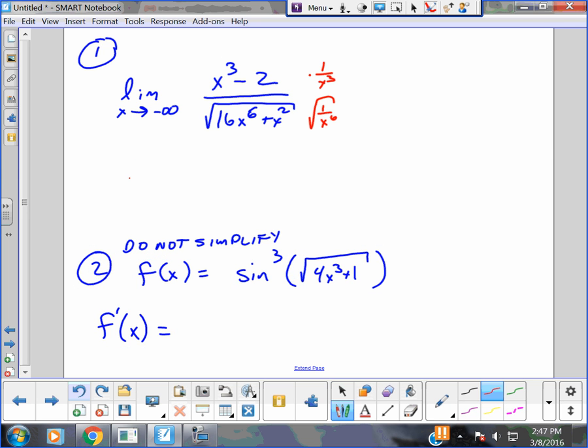But then what you have, you can just get the limit as x goes to negative infinity of one minus two over x cubed. And that's going to make it go to zero. Over, we're going to distribute this into the radical. Sixteen plus one over x to the fourth. We remember any time you have a limit as x goes to infinity, one over any x power goes to zero.